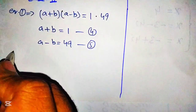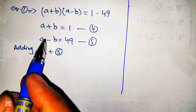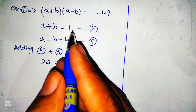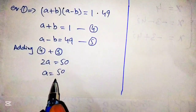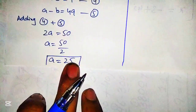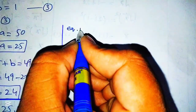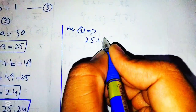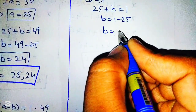To find the value of a and b, we add equation 4 and equation number 5. Again a plus a becomes 2a, and the positive b cancels with the negative b. On the right-hand side, 1 plus 49 becomes 50, so a equals 50 over 2, which is 25. Putting this value of a into equation number 4: 25 plus b equals 1, so b equals 1 minus 25, and b equals negative 24.